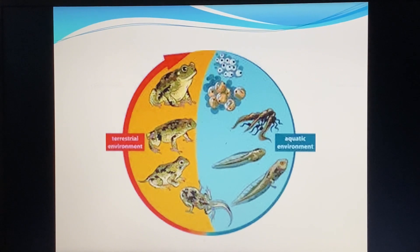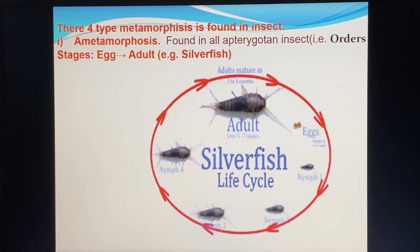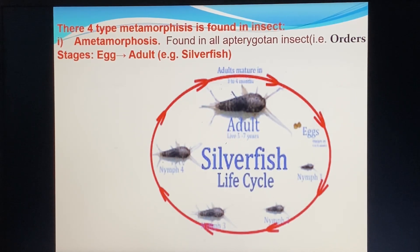To identify insects' larva, pupa, and adult stages, metamorphosis is needed to study. There are four types of metamorphosis found in insects. The first is no metamorphosis, which is found in all the primitive attributes of the insect.